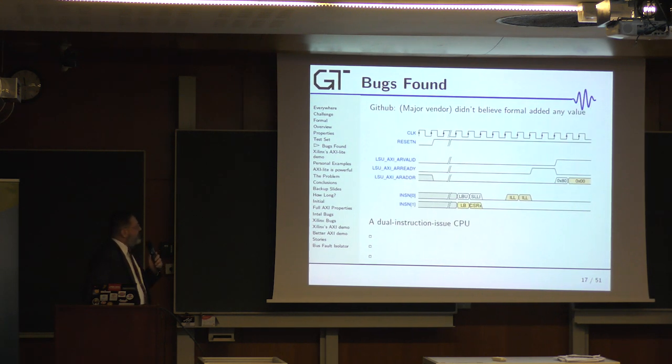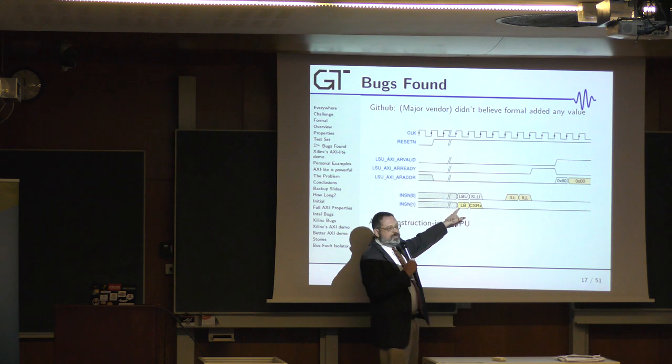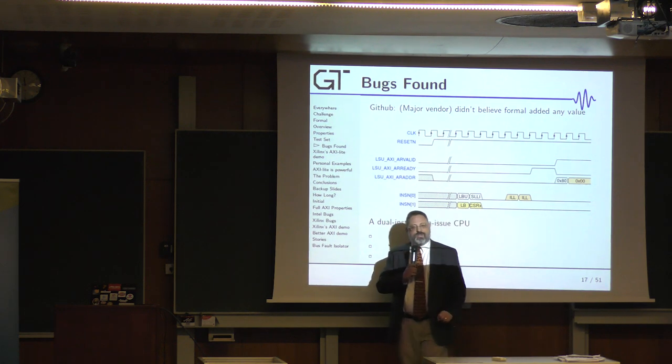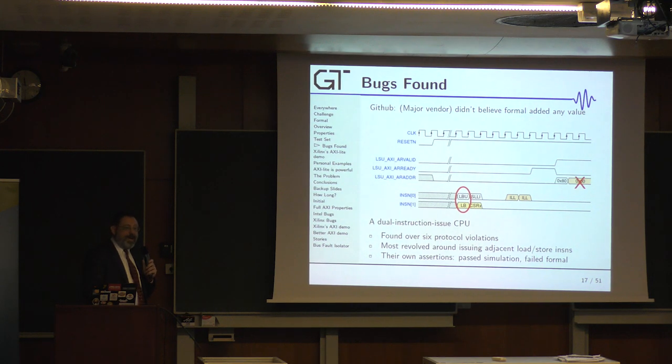Here's an example from a major vendor. Shall we say hello to the major vendor here? Western Digital. Hello. This one's actually on me. It's not on them. You'll see. But in this case, if you ever had two loads in a row, two stores in a row, one on each of the two instruction streams, you might get something dropped along the way. And so I was pretty excited about this. I found over six protocol violations. I was, hey, I'm doing really good. This is a nice major vendor core. Most revolved around adjacent loads in stores. They dropped a request. Their own assertions passed to a simulation, failed formal.